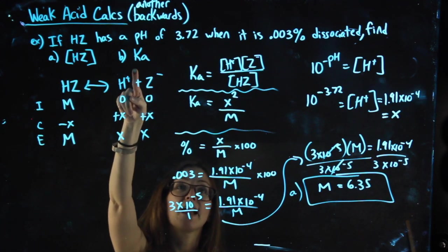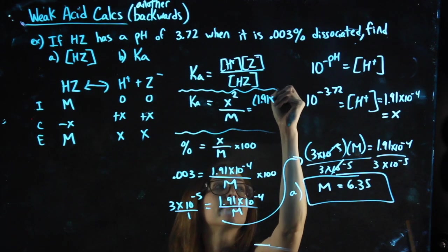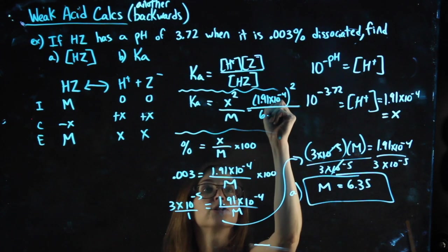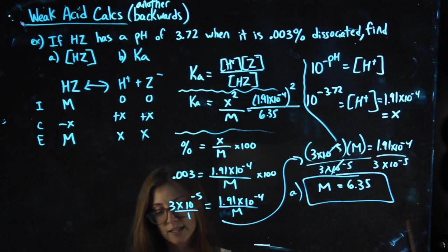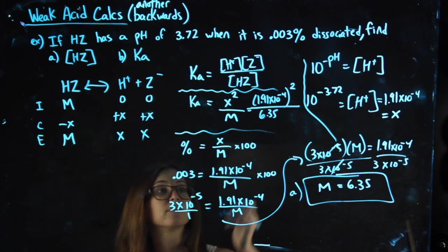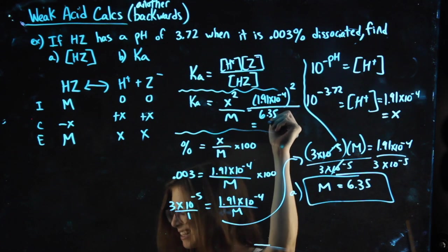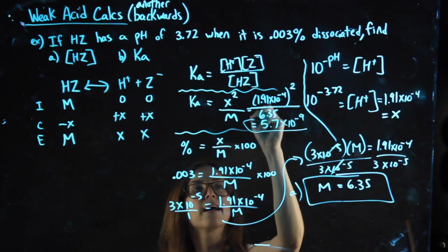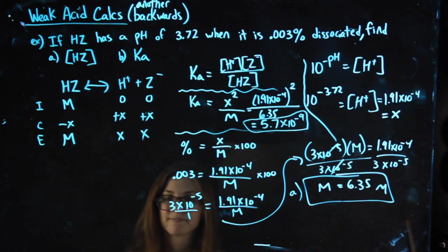Part B wants my Ka value. Well, here I have my X value that I can plug in. It says to square it over my M value that I just found. Sorry, I'm being a little squished there. But I'm doing 1.91 times 10 to the negative 4 squared divided by 6.35. And for my Ka for part B, I get 5.7 times 10 to the negative 9. There are no units on Ka. The units here are molarity. The units here are molarity. That's it.